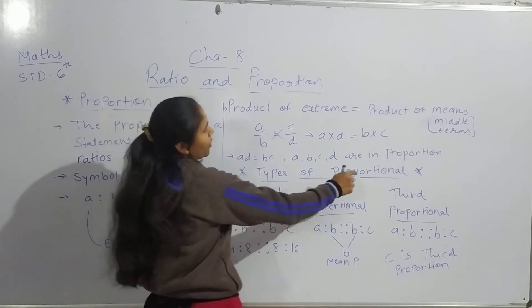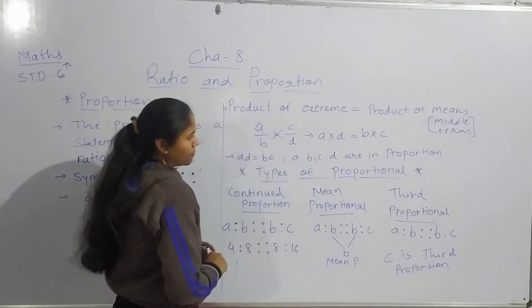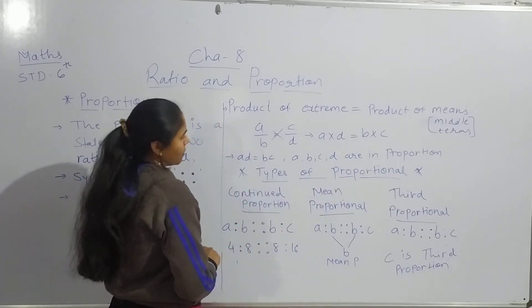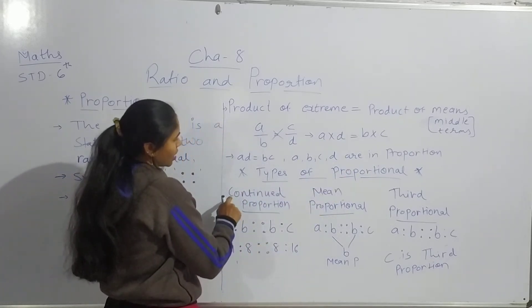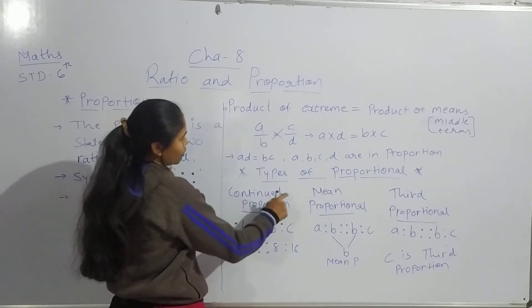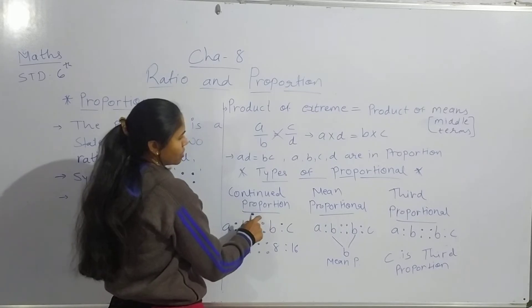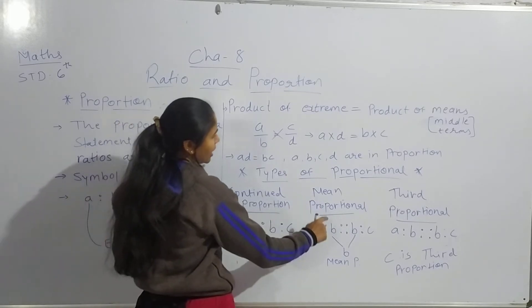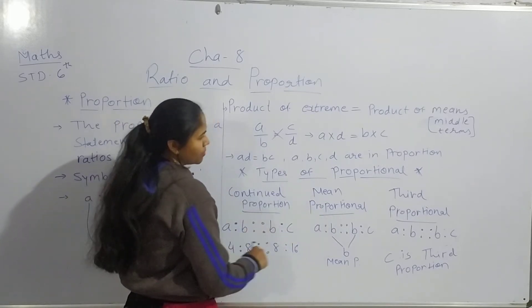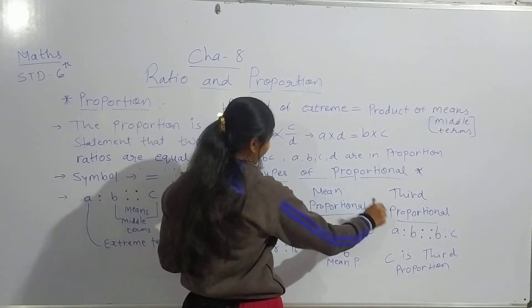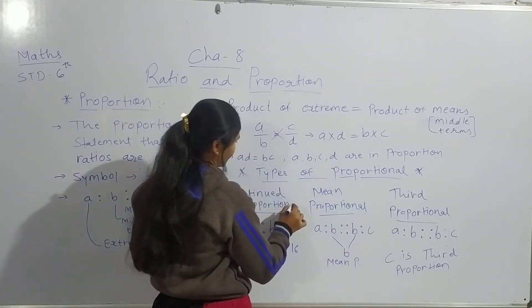Now, types of proportion. The first is continued proportion, the second is mean proportional, and the third is third proportional.